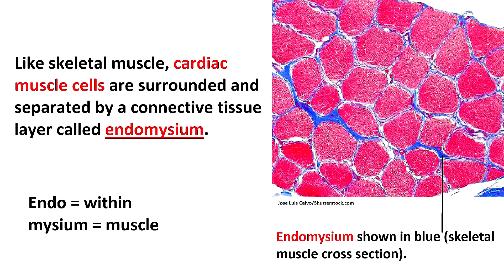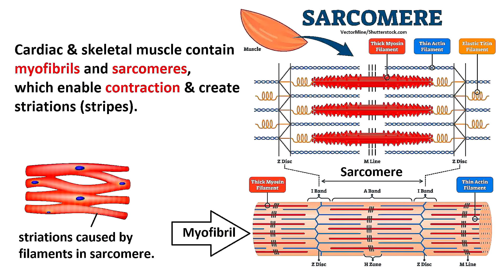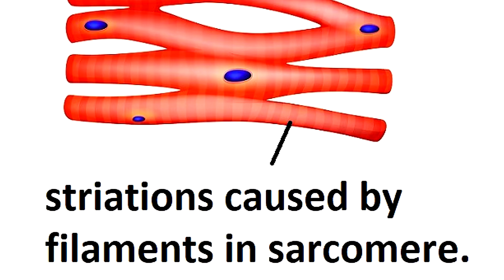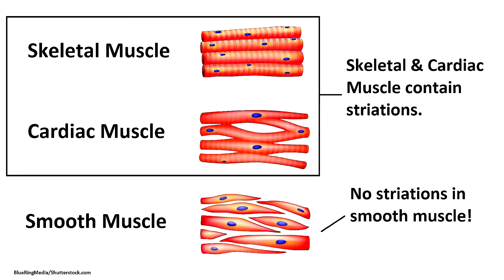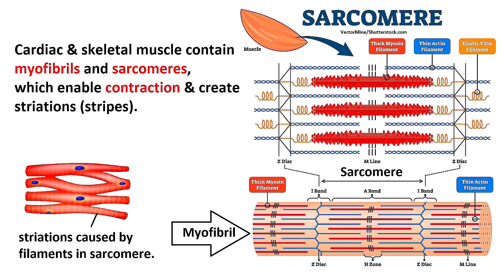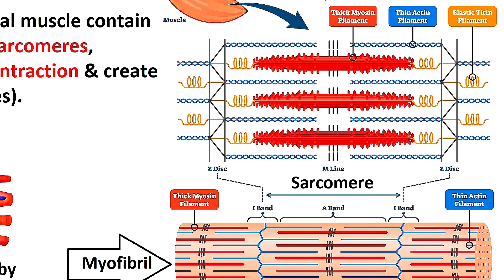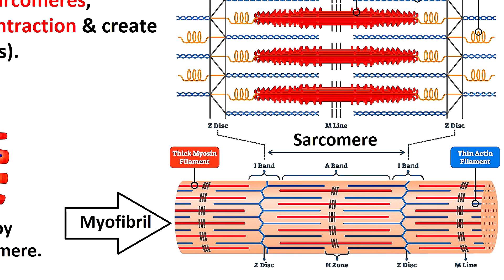Cardiac muscle tissue shares some similarities to skeletal muscle tissue but there are also key differences. Like skeletal muscle, cardiac muscle cells are surrounded and separated by a connective tissue layer called endomysium. Cardiac muscle also contains myofibrils and sarcomeres, which not only enable contraction but also create striations or the striped pattern that characterizes both cardiac and skeletal muscle tissue. The specific arrangement of actin and myosin filaments into zones and bands creates that striated appearance.